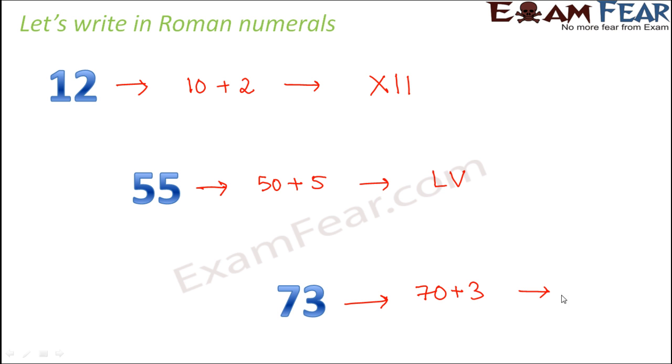Seventy-three can be written as 70 plus 3. So what is 70? 70 is 50 plus 20. So basically 50 is L, 20 would be XX, and 3 would be III. So this is how you can write 73.